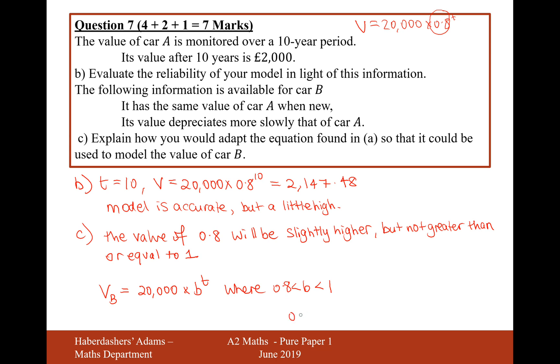Say if it was 0.9, it would only be depreciating by 10% each year. But in the model for car A, it's depreciating by 20% every year.